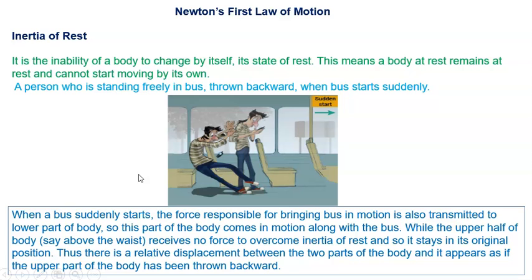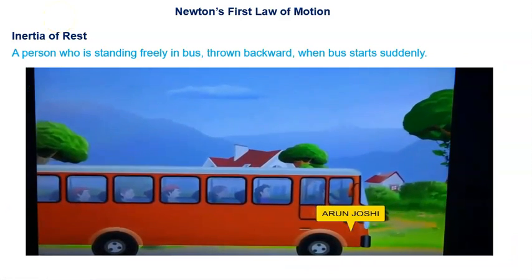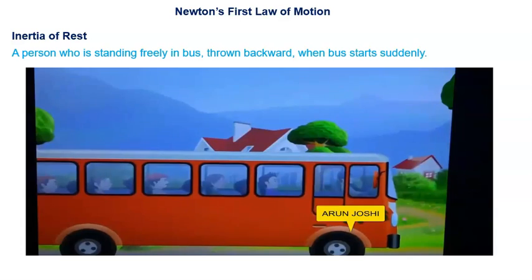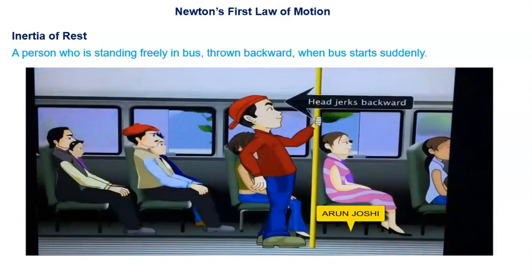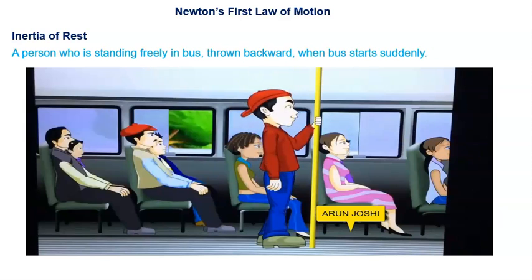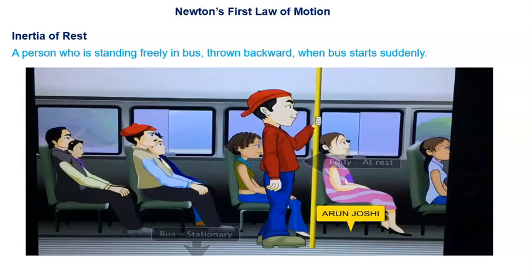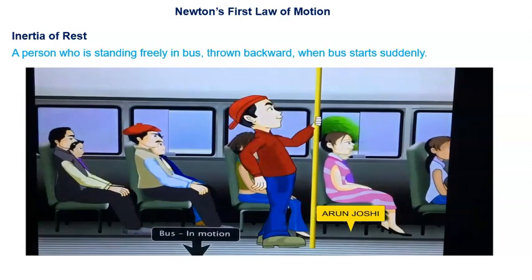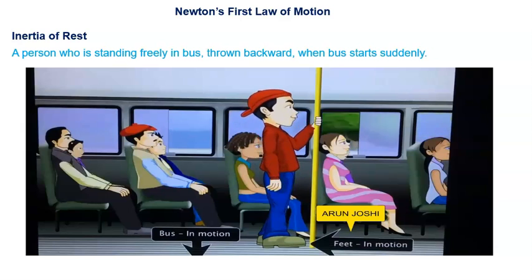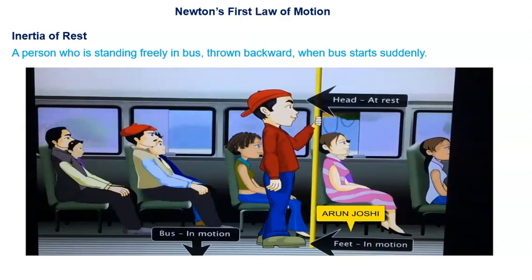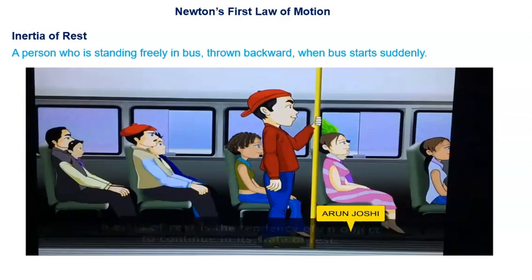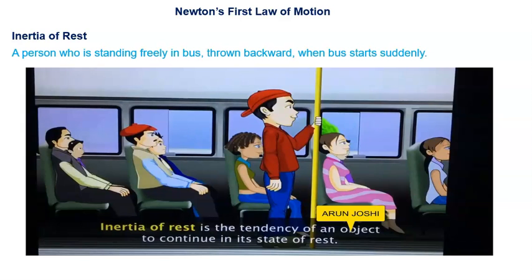Now I will discuss this with the help of the animation. As the bus starts to move, your head is pushed backwards. When the bus was stationary your body was at rest. When the bus started moving, your feet which touched the floor of the bus started moving simultaneously. But your head exhibited a type of inertia called inertia of rest. Inertia of rest is the tendency of an object to continue in its state of rest.